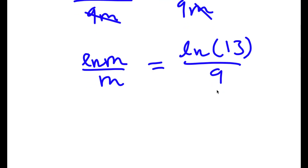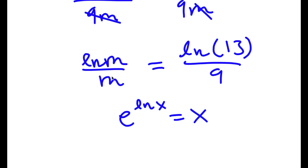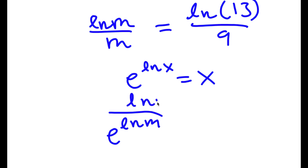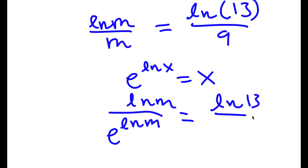Now, if I have e to the power of ln of x, this is actually equal to x because the e and ln cancel out. So m here — e to the power of ln m equals m. So now I have ln m over e to the power of ln m, which is equal to ln 13 over 9.